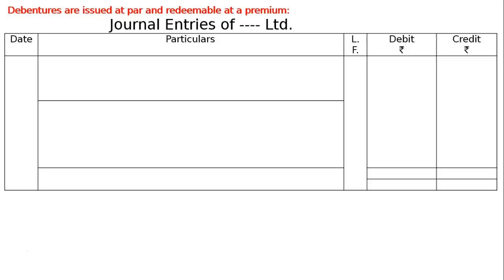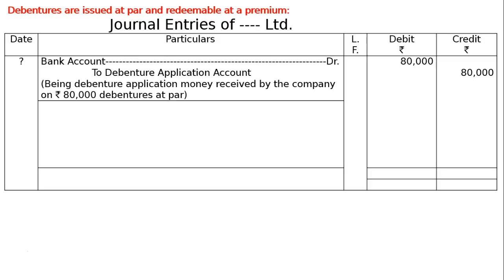Hence, bank account debited to debenture application account, i.e. Rs. 80,000 both in the debit and credit columns. Being debenture application money received by the company on Rs. 80,000 debentures at par.